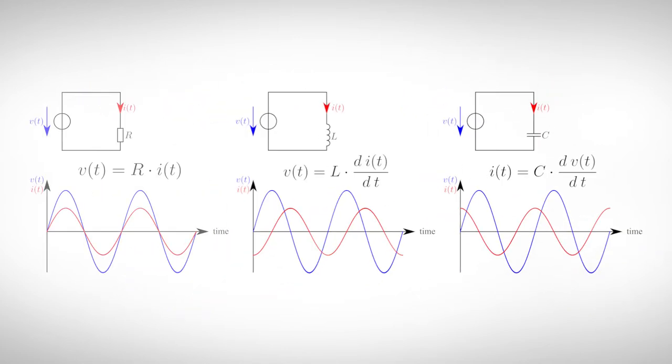This behavior can be explained by the standard equations for our components. The current flowing through the capacitor is the time derivative of the applied voltage. So if we apply a sine voltage, the current will be a cosine. For the inductor, the voltage is the time derivative of the flowing current. So if we apply a sine current, the voltage will be a cosine. Therefore, the current is either leading or lagging by 90 degrees.